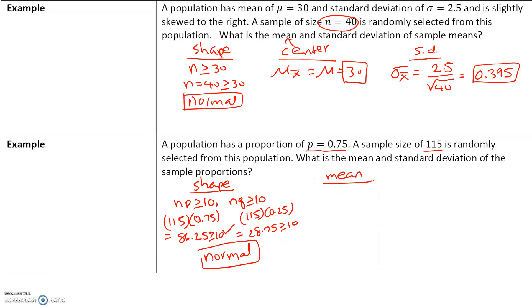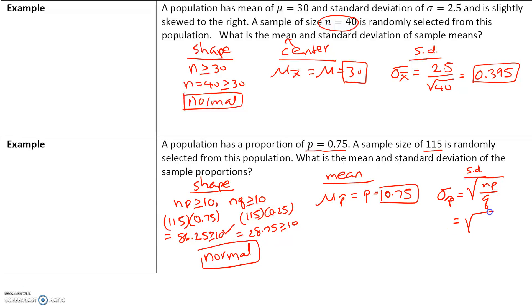Let's find the center or the mean. The mean of all sample proportions equals p, the population proportion, which is 0.75. For standard deviation, the formula is the square root of pq over n. So p is 0.75, q is 0.25, and n is 115. We have the square root of 0.75 times 0.25 over 115, and that comes out to be 0.0040. Work that out yourself to make sure you can do it.